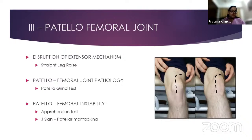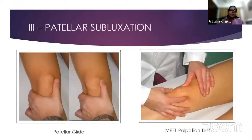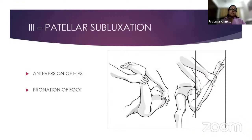Coming to the patellofemoral joint, a great way to check for extensor mechanism disruption is a straight leg raise. You can do a patella grind test for other PFJ pathology. For instability, the apprehension test is good on an outpatient basis — hold the patella on the lateral aspect with your thumbs to avoid active subluxation. The J-sign is a good sign to pick up patella maltracking when coming from flexion to extension. The patella glide test — giving a lateral stress at the joint; more than 75 percent glide is positive. You can also check for the MPFL on palpation.